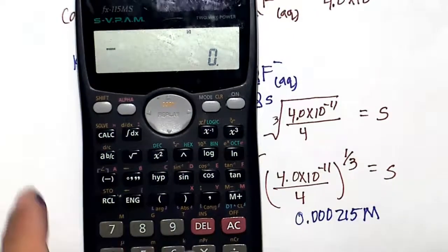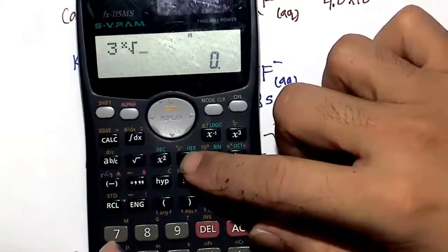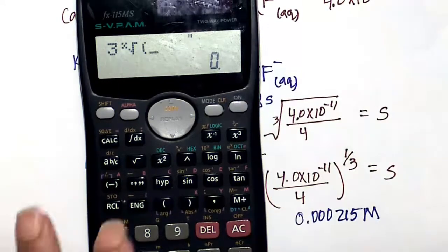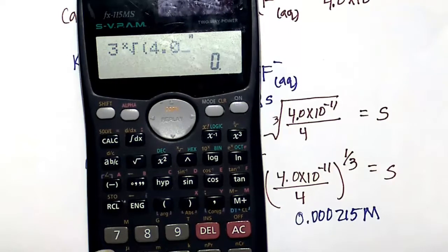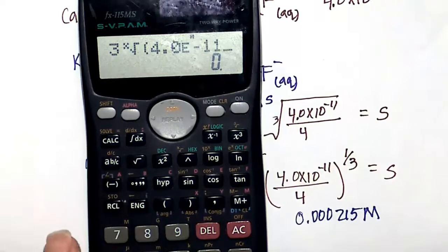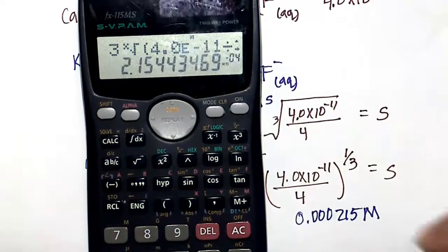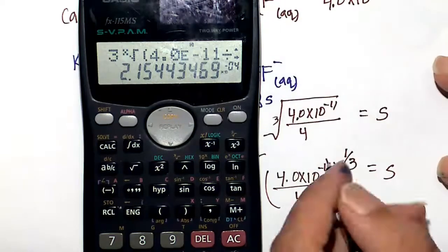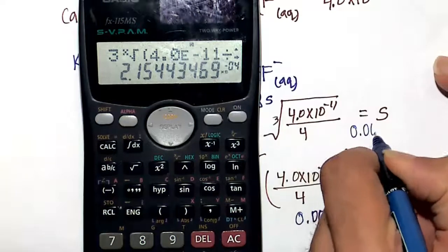We can look at that little symbol there, 3, and we're going to take the square root of that number here, 4 times 10 to the minus 11 divided by 4. We should get the same answer, and we do 0.000215. So you can raise it to the one-third power or use that button on your calculator to get the cube root.